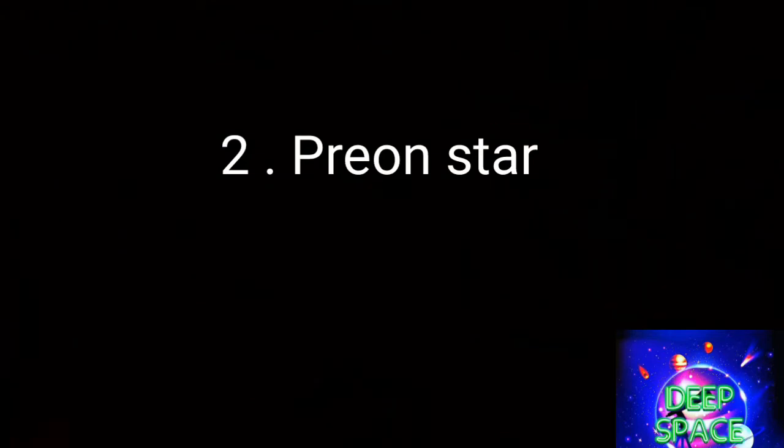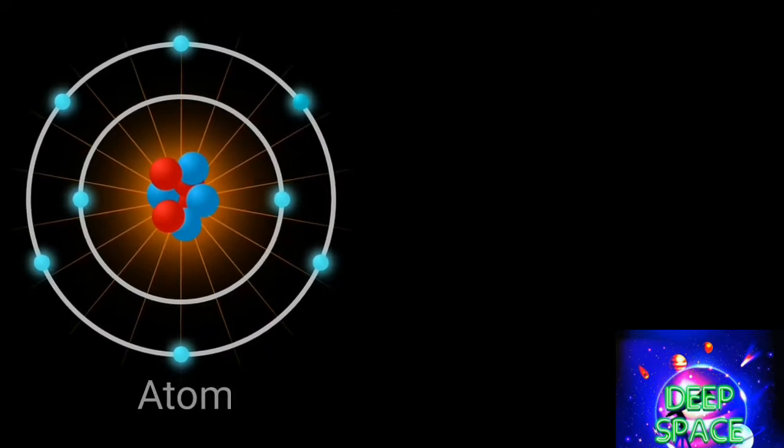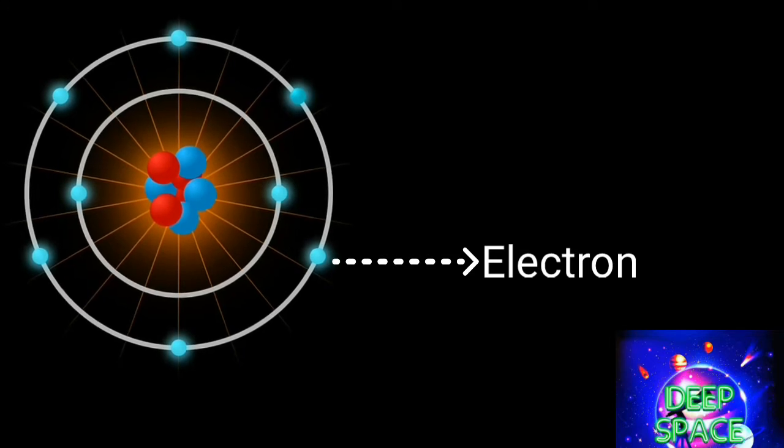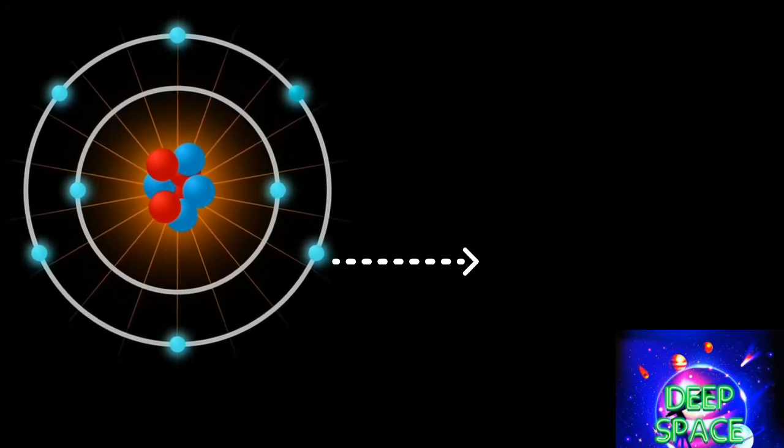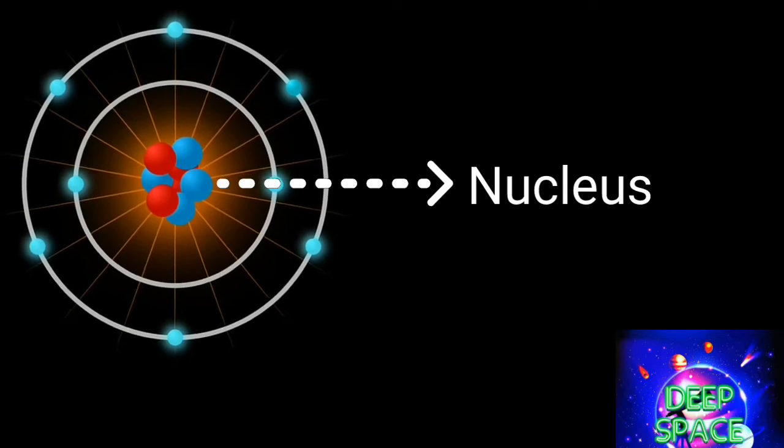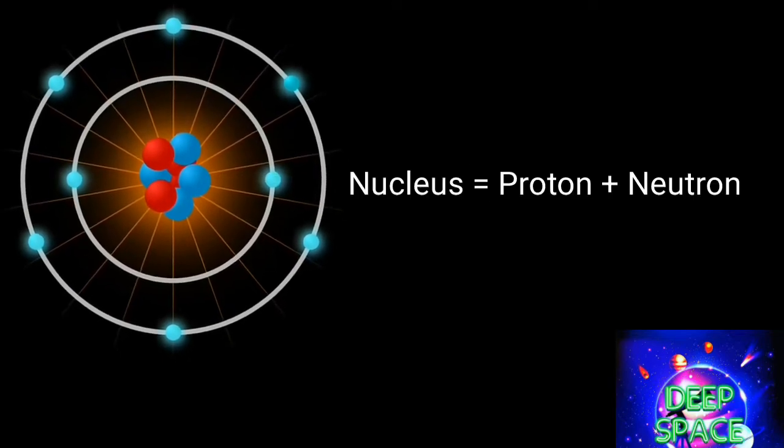Preon star. In our surroundings, matter is generally made up of molecules and atoms. Every atom is composed of a nucleus and one or more electrons bound to the nucleus. The nucleus is made of one or more protons and a number of neutrons.